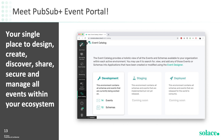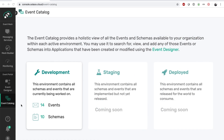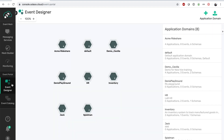Next in this video we will look at some of the capabilities in our early access version of the Event Portal, and how it can help us take the Acme Rideshare example from design — associating events with applications to generating code for the application. Let's start by exploring the Event Designer. The Event Designer is a place where application teams can collaborate and design all aspects of your event-driven architecture.